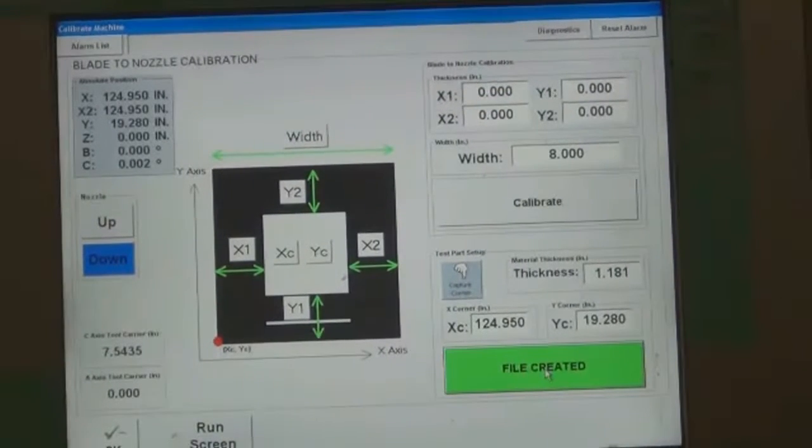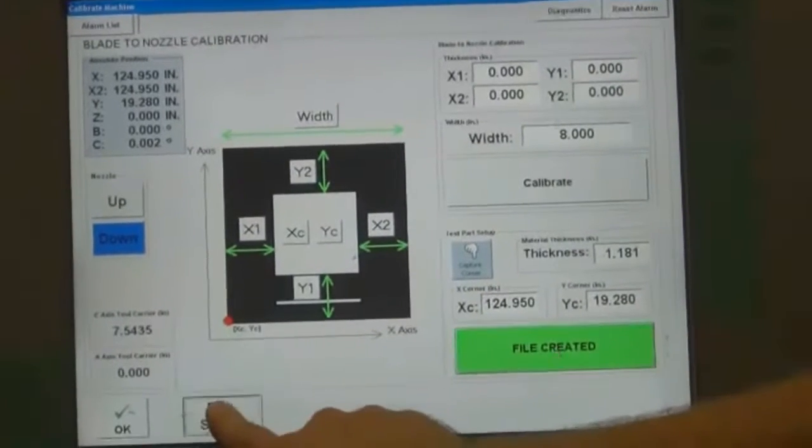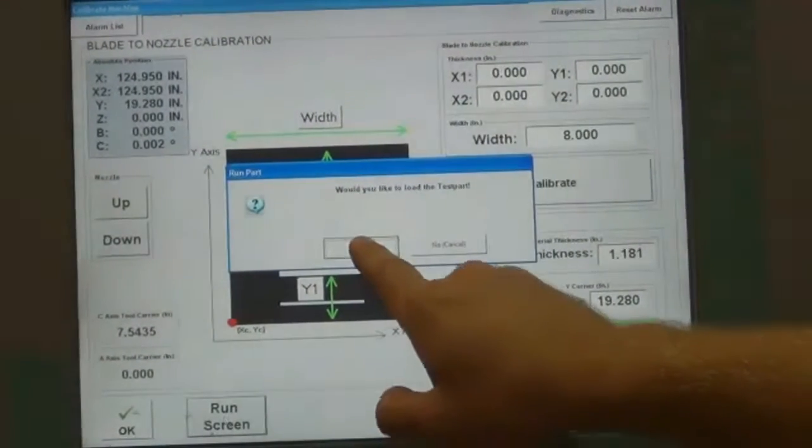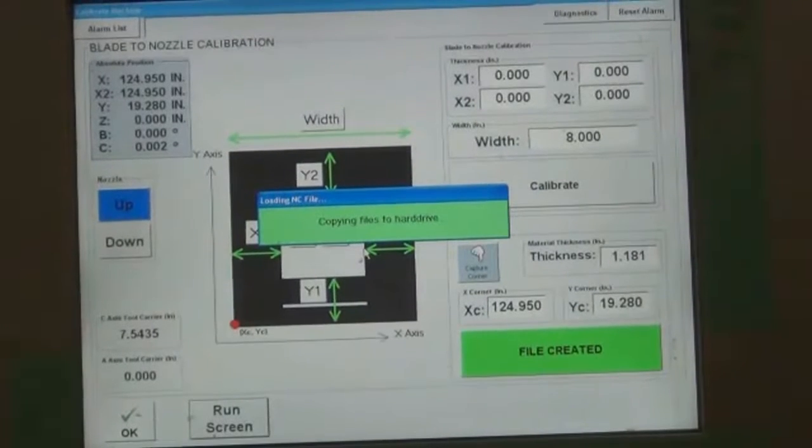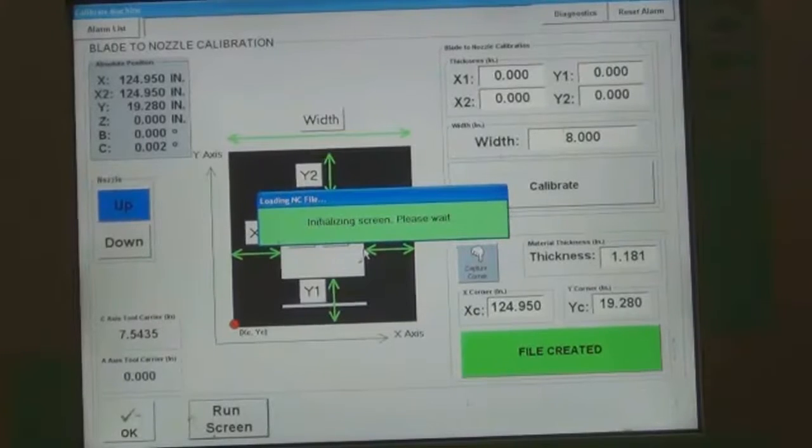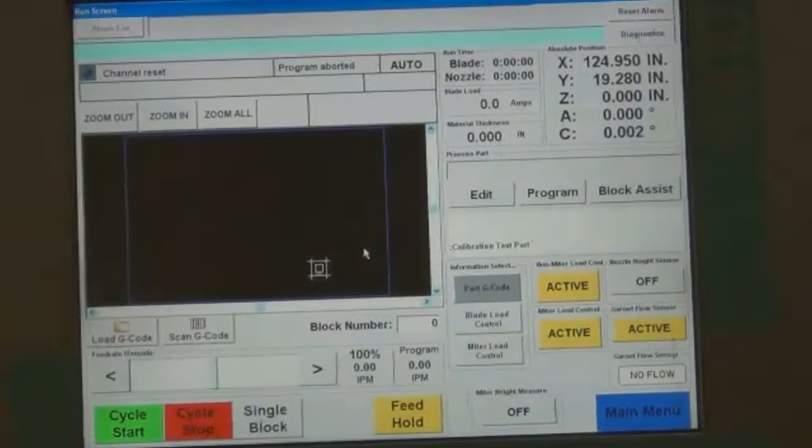Press the Create File button. Press the Run Screen button. When the Run Part dialog box appears, press the Yes button. The proper files are loaded into the machine. Once the files are loaded, the Run Screen automatically opens.